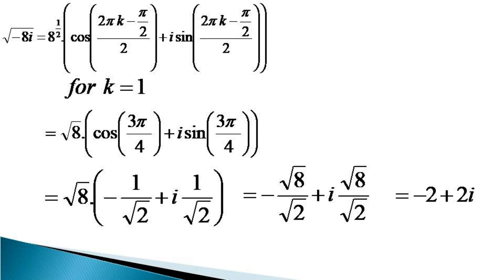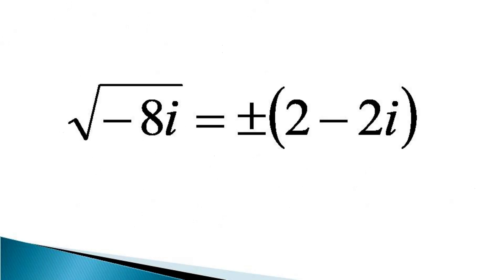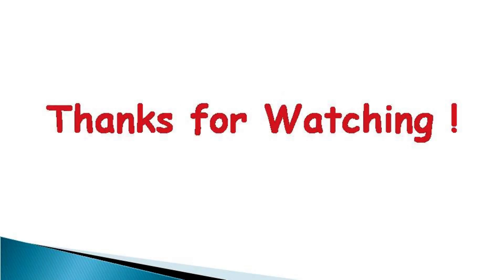So the second root of √(−8i) is −2 + 2i. Our final answer for the square root of minus 8i can be represented as ±(2 − 2i). This is our required solution. Thanks for watching.